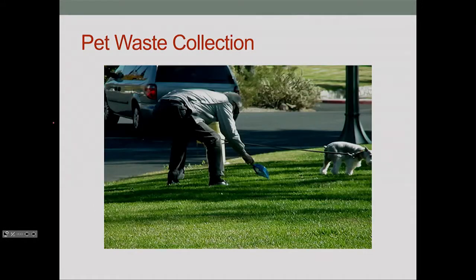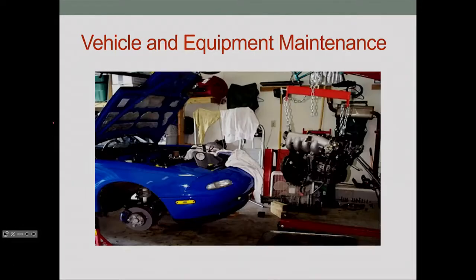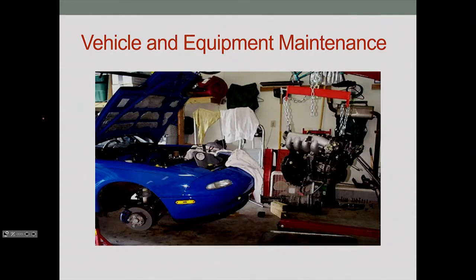Pet waste is a major source of pollutants. Any pet waste that's left behind will potentially end up in the water system along with the nutrients within it. Vehicle and equipment maintenance is another source — when you work on your car, anything that spills out often ends up on the floor of the garage. If the garage is cleaned out, perhaps by spraying water across it, that water flows down into the larger system. These are again sources of undesirable pollutants.